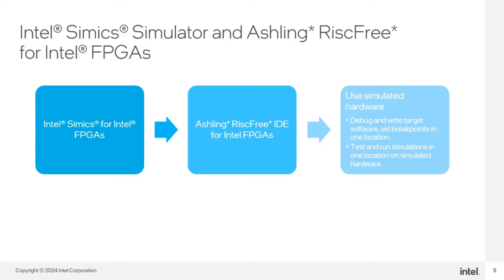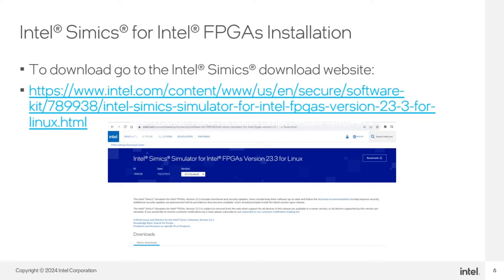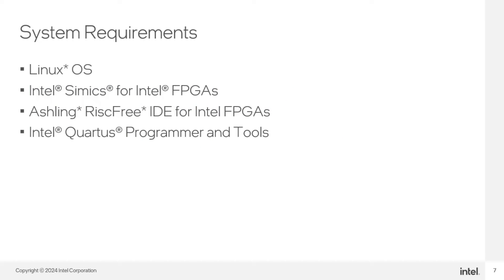Integrate Ashling RISC-V IDE for Intel FPGAs and Intel Simix Simulator as a complete development environment for your target software. You can write your target program, test it, run simulations, and debug it all in one location on your target hardware. To download the Intel Simix Simulator, you can go to the provided link in the resources section at the top right of this presentation or to intel.com and use the search box. This is the list of requirements to get started with Intel Simix and Ashling RISC-V IDE for Intel FPGAs.